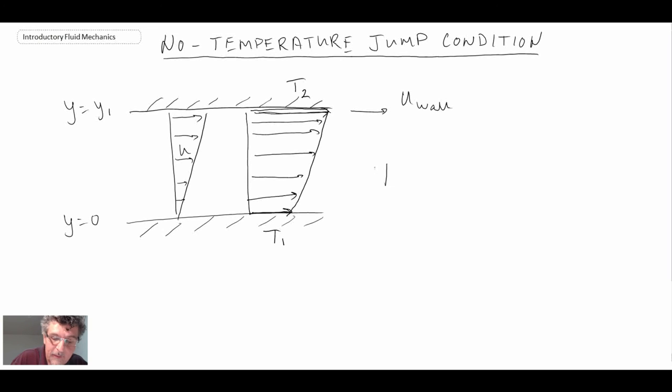What we say is that T at y equals zero, at the lower wall, is going to be equal to the temperature of the lower wall, T1. And T at y equals y1 is going to be equal to the temperature of the upper wall, T2. That's the no-temperature jump condition. The fluid right along the wall will be the same as the temperature of the wall itself. Through heat transfer, we'll have conduction going through, so there would be heat flowing. It would come in through conduction and then leave through convection or radiation depending upon the fluid and the temperature of the wall.